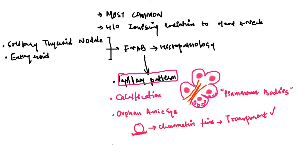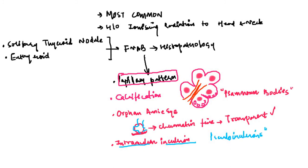The last feature seen under the microscope is what is called intranuclear inclusion. When we look under the microscope it appears as though the cytoplasm is throwing some infoldings within the nucleus. These are called intranuclear inclusions, but they are basically pseudo-inclusions — not true inclusions. These are the features seen under the microscope in cases of papillary carcinoma of the thyroid.